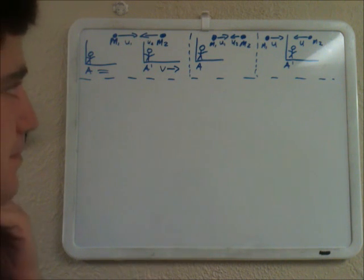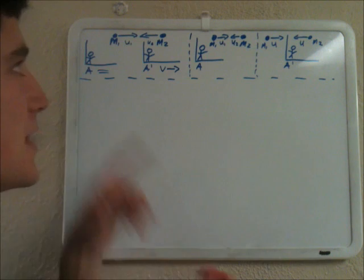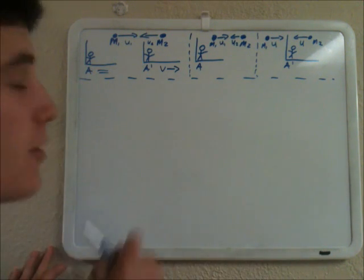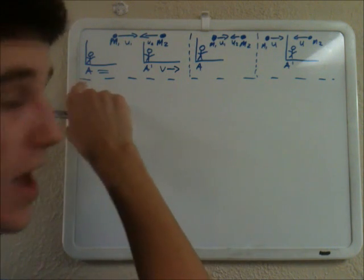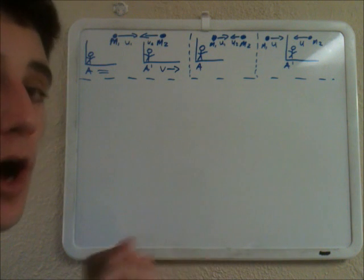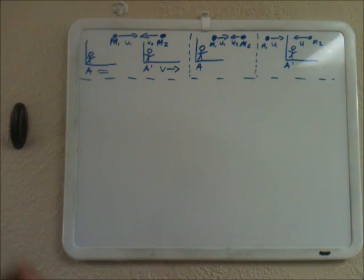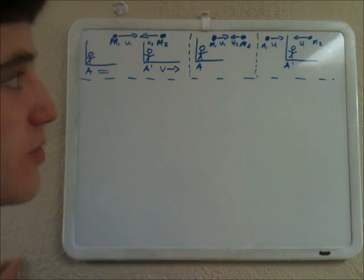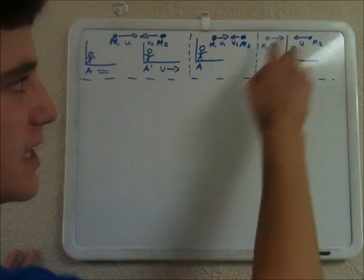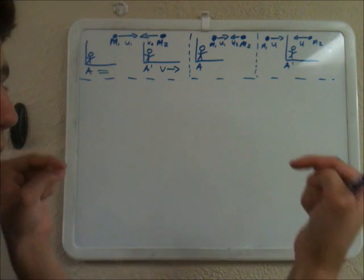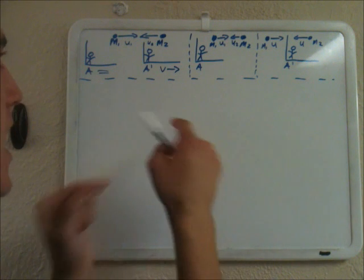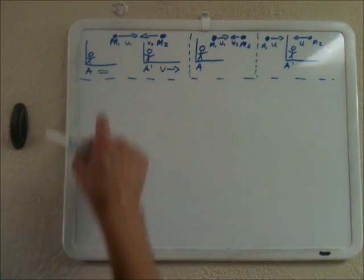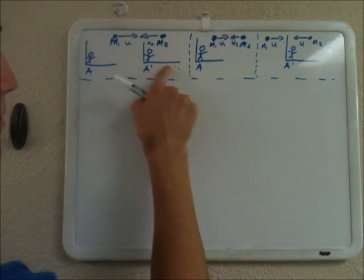What velocity v actually means is that when these two masses collide, from A prime — from the perspective of A's frame of reference — they will stick together and continue moving at velocity v. So A prime, from the perspective of A, is moving at the same velocity that the two objects will be moving when they collide and stick together. From A prime's reference, m1 and m2 are moving at velocities positive and negative u, and they're going to collide.